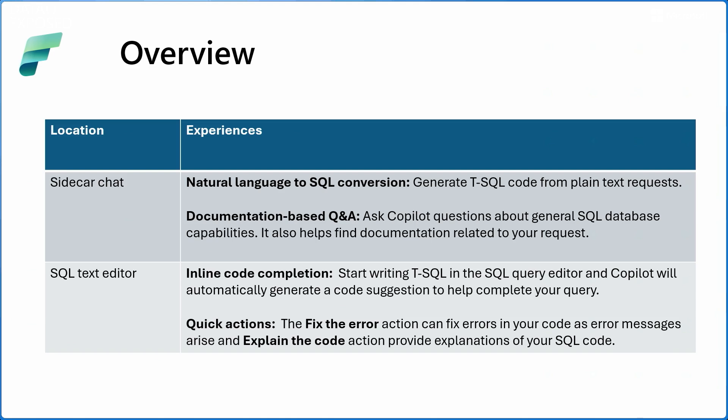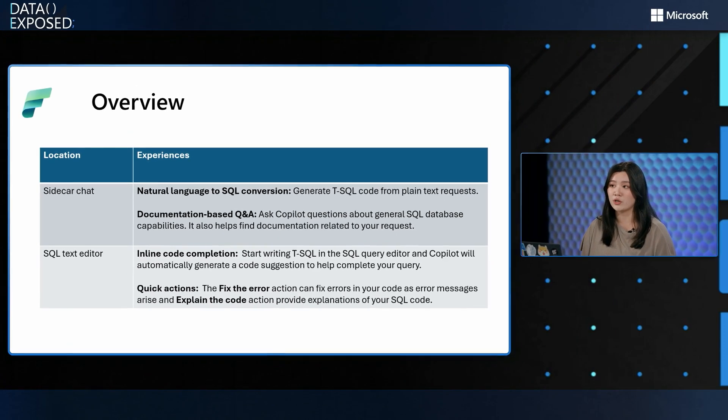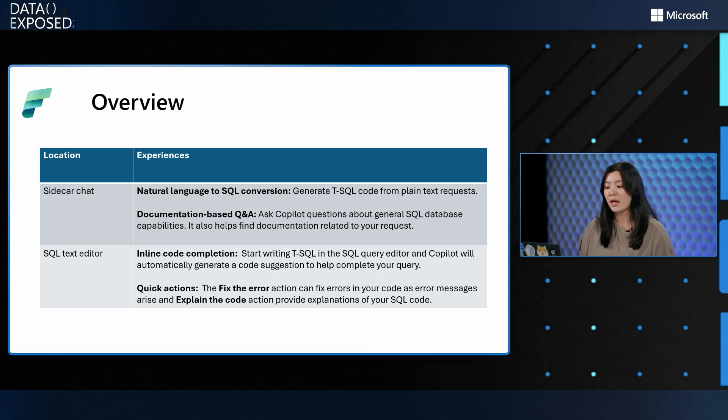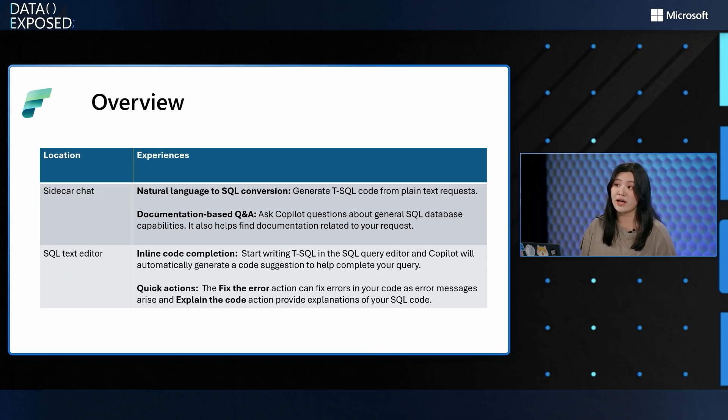There are two different experiences in the sidecar chat. The first is natural language to SQL conversion — you give it a natural language request and it helps you generate T-SQL code, so you can ask things like 'help me create a table' or 'help me add a column.' There's also documentation-based Q&A, where you can ask copilot questions about SQL Database in Fabric and it leverages Microsoft Learn documentation to answer accordingly. The second location is the SQL Text Editor, which has inline code completion that provides code suggestions as you type, plus two quick actions: fix the query and explain the code.